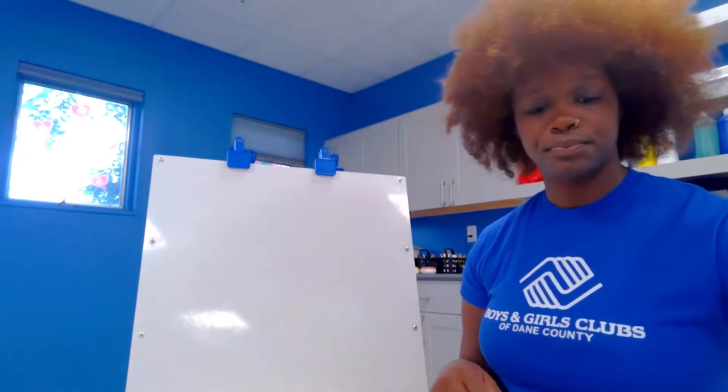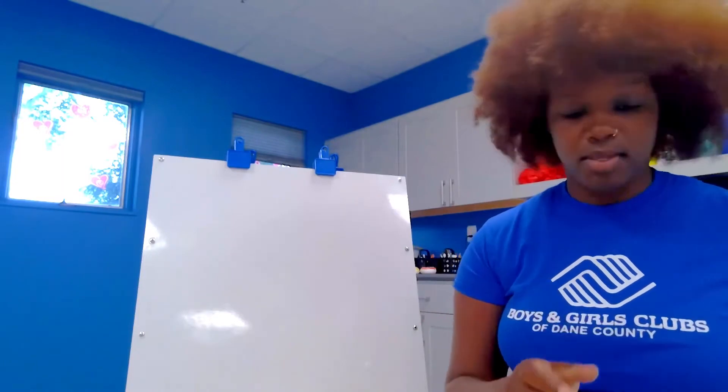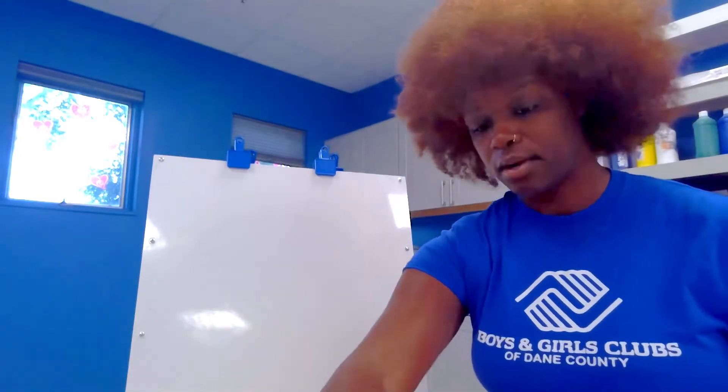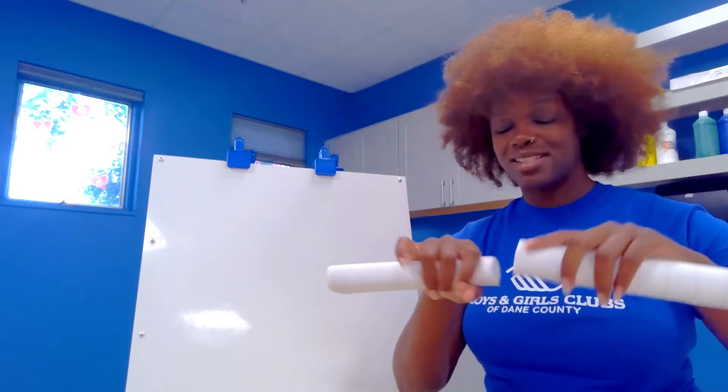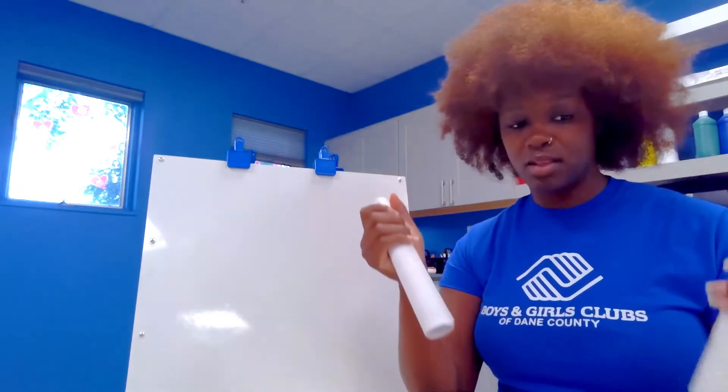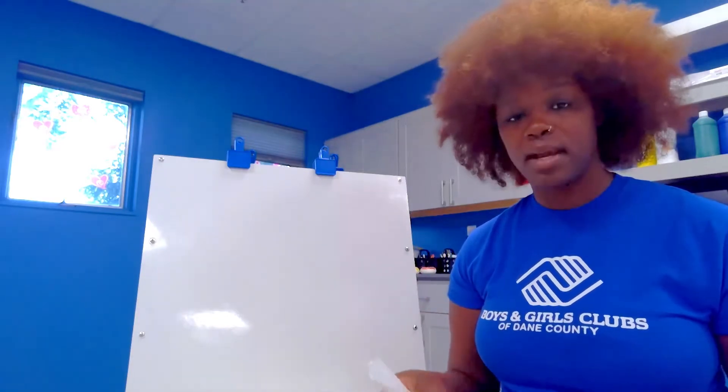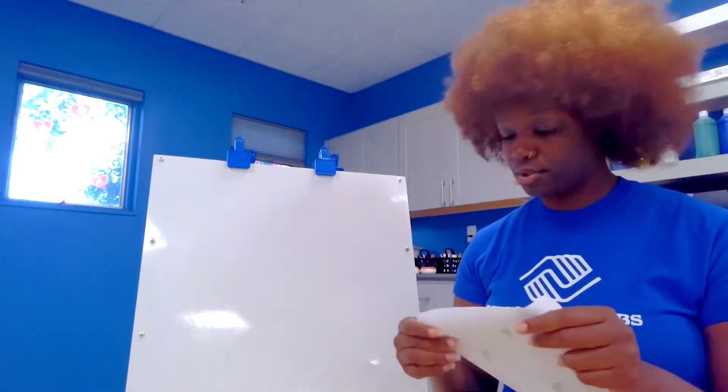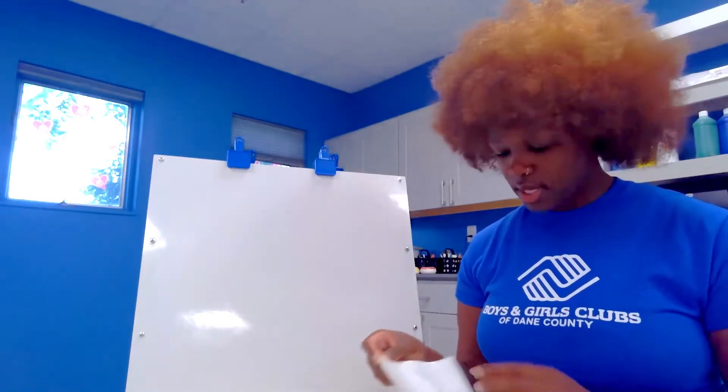So you're going to take your contact paper. Miss Passion has already cut hers, so it'll be on a long tube. I just sliced mine in half to make it a little bit easier for me. And you can ask your parents for help if you want, or any adult around you.